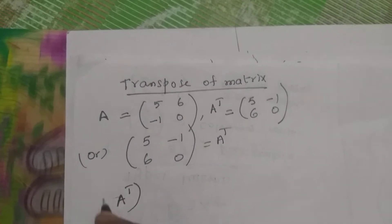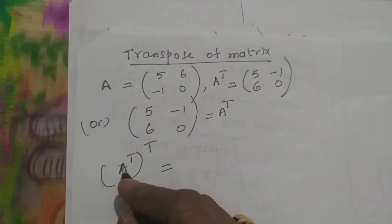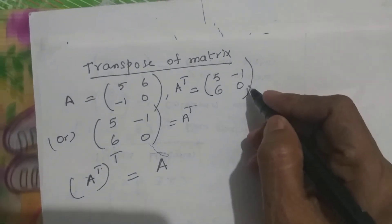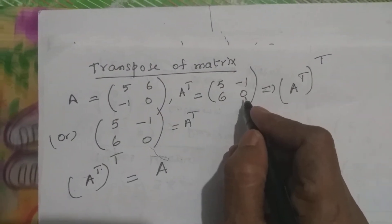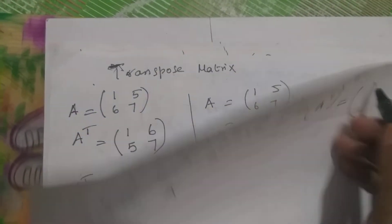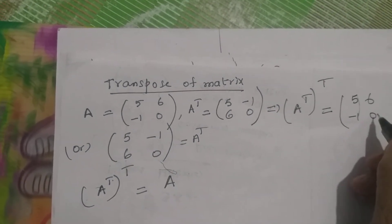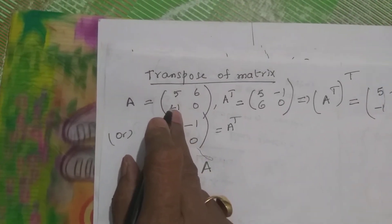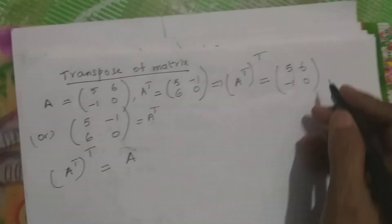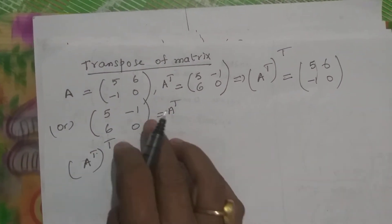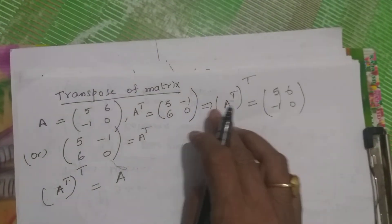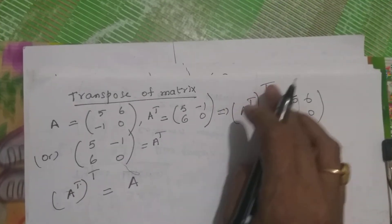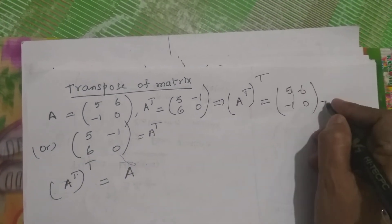There is one formula for transpose: if you do transpose twice — A power t, power t — then the answer is A. For example, A transpose is [5, -1; 6, 0]. Now find A transpose again — transpose of A transpose. You get back [5, 6; -1, 0], which is equal to A. That is why A^(t)^(t) = A.